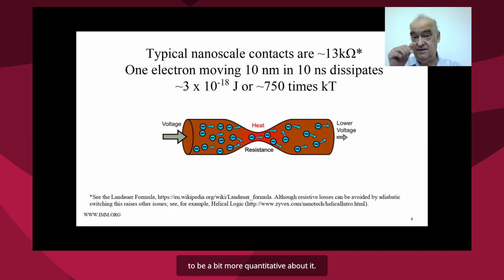To be a bit more quantitative about it, if you move an electron through a wire some ten nanometers in distance at a speed of 10 nanoseconds corresponding to the 100 megahertz we were talking about, and if you assume it goes through a contact, you often have to have features in your wiring in order to have any kind of circuitry. Then you're going to have at least 13 kilohms for fundamental quantum mechanical reasons. And unless you anticipate having ballistic transport as in a single walled nanotube,